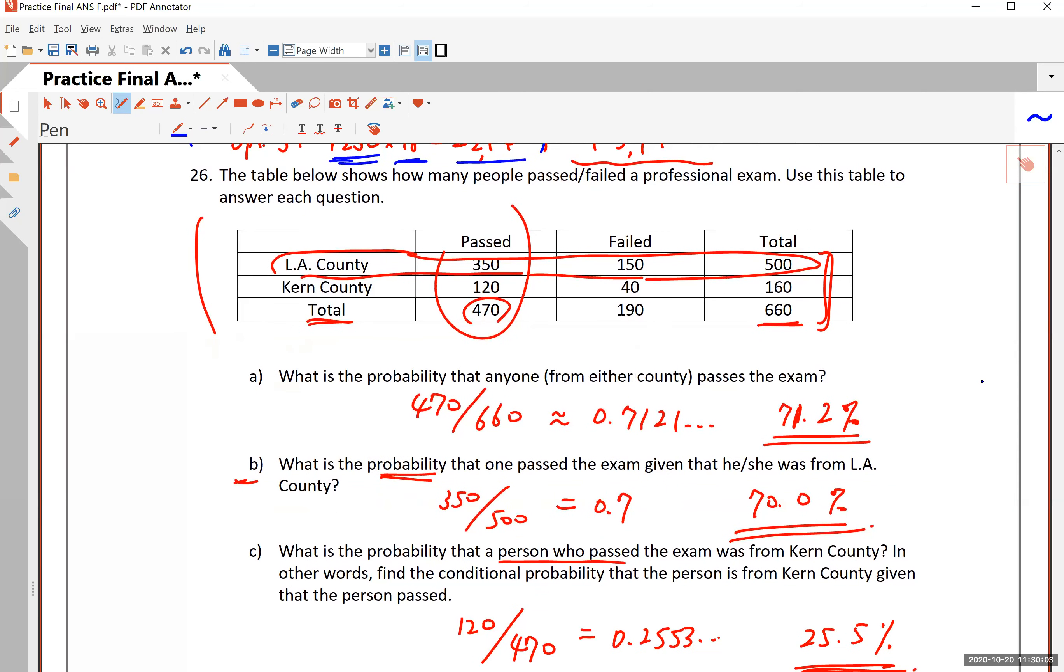Number 26, the table below shows how many people passed and failed a professional exam. Use this table to answer each question. You have two counties involved, LA County and Kern County to the north of LA County. And you have numbers of people who passed and who failed. What is the probability that anyone from either county passed the exam? Sometimes you have to look at a certain row or a certain column. In this case, because you are not asking which county you would be looking at the total row. How many people passed? 470 out of 660. So you divide 470 by 660. The answer is 71% or 71.21%.